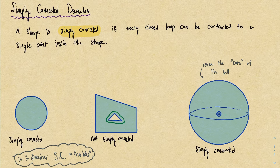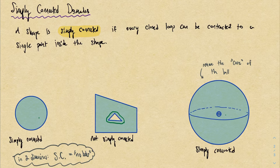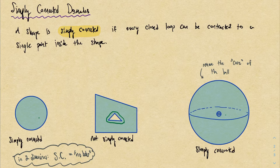That's what being simply connected means. In a multivariable calculus class, the domains we deal with will be relatively straightforward, so I wouldn't worry about this notion too much. The key point is that on nice enough domains, you can use the curl being zero to conclude that a vector field is conservative. Now let's put this into action and look at a couple of examples.